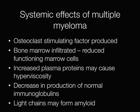The morbidity and mortality caused by multiple myeloma is due to the systemic effects the disease causes. Osteoclast stimulating factor is produced, causing the bones to become weak and susceptible to fracture. Infiltration of bone marrow by the neoplastic cells reduces the number of functioning bone marrow cells, causing a decrease in production of normal immunoglobulins, and the plasma proteins may cause hyperviscosity. Another important complication is the production of AL type amyloid from the light chains.